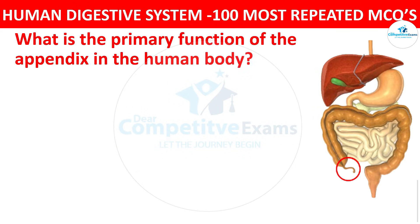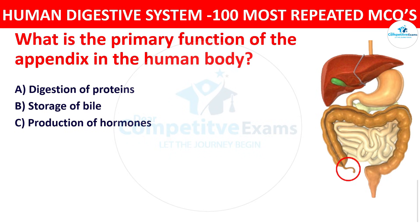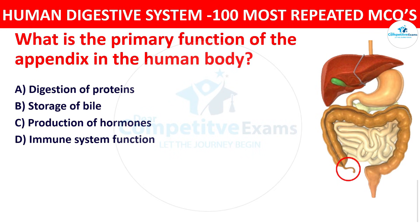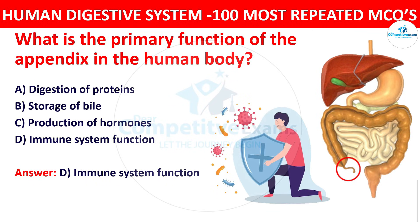Question number fifteen: What is the primary function of the appendix in the human body? Your options are digestion of proteins, storage of bile, production of hormones, or immune system function. The right answer is immune system function. The appendix plays a role in the immune system, containing lymphoid tissue that contributes to immune responses.